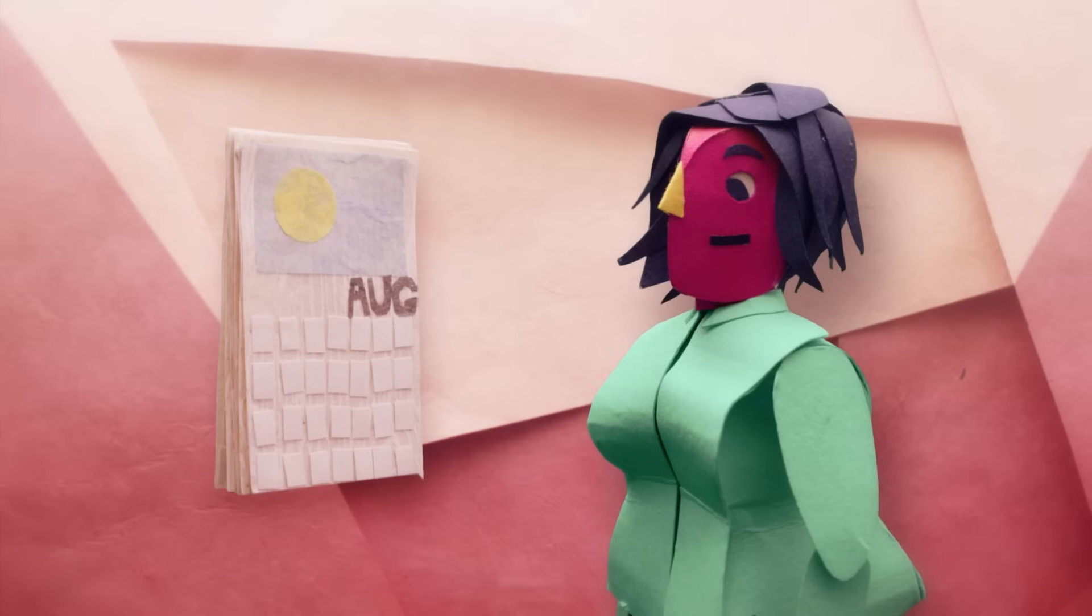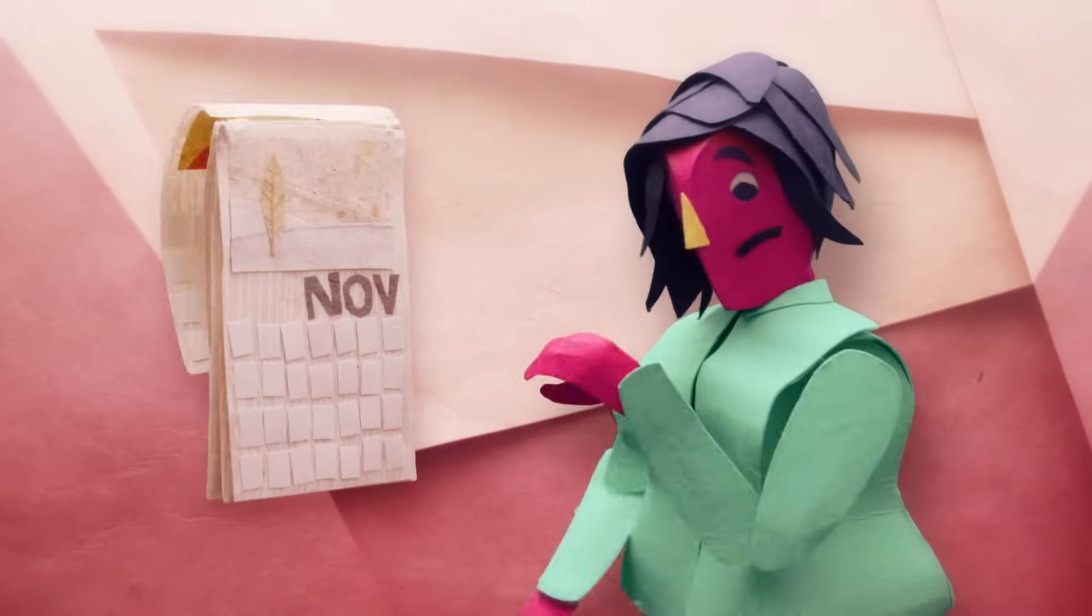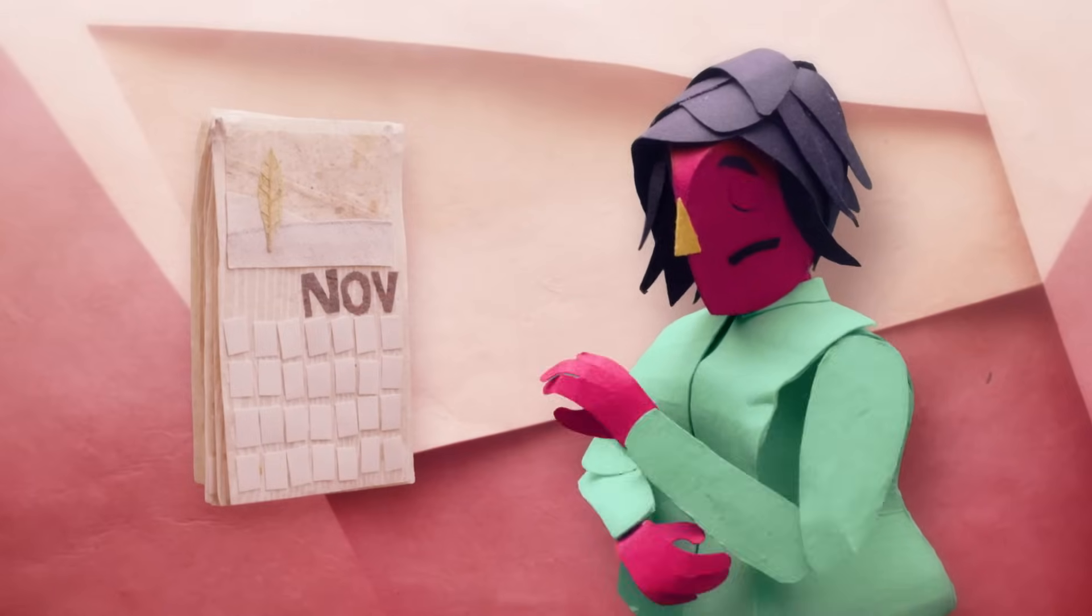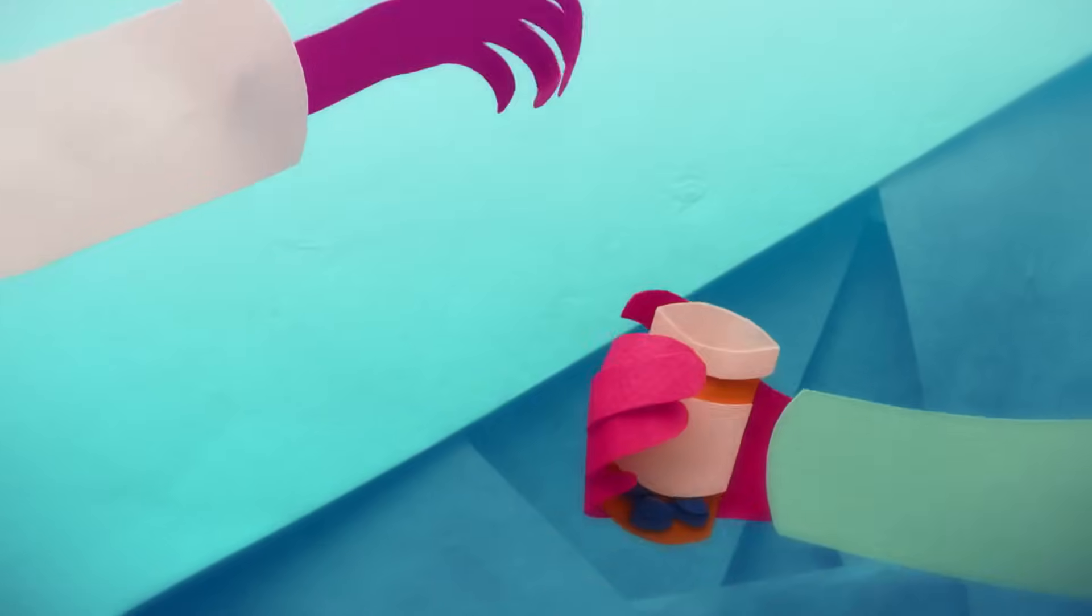Susan gets treated for the broken bone. But three months later, her arm still hurts. And now that pain is making her feel depressed and anxious. So her doctor prescribes an opioid painkiller.